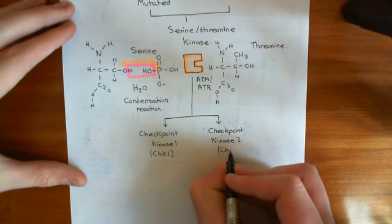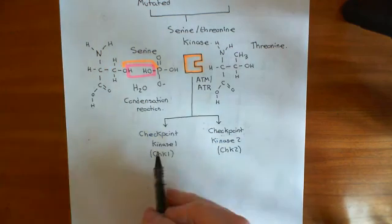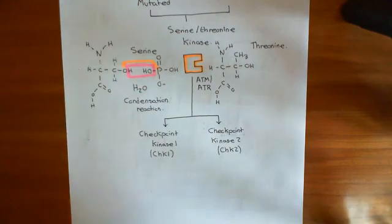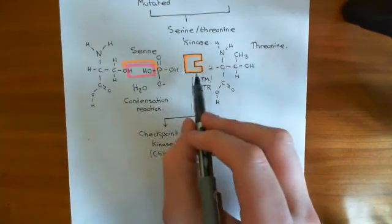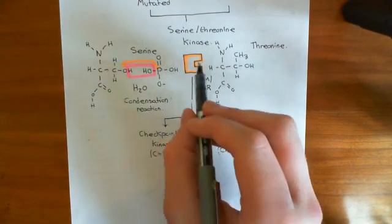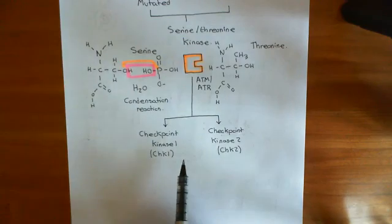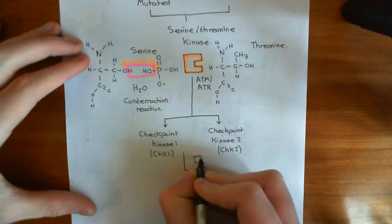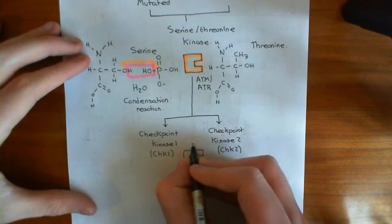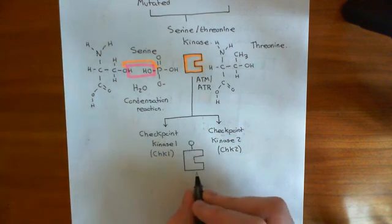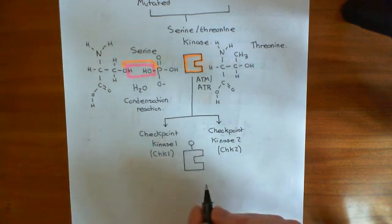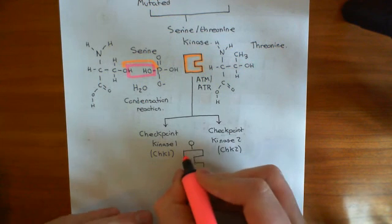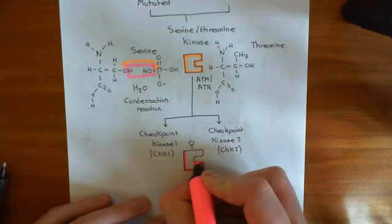These two enzymes are serine and threonine kinases. Before they receive the phosphate group from activated ATM or ATR, they are inactive. Upon receiving this phosphorylation, they become active. Here is our checkpoint kinase 1 or 2 enzyme now with a phosphate group stuck on it, and it's now active.